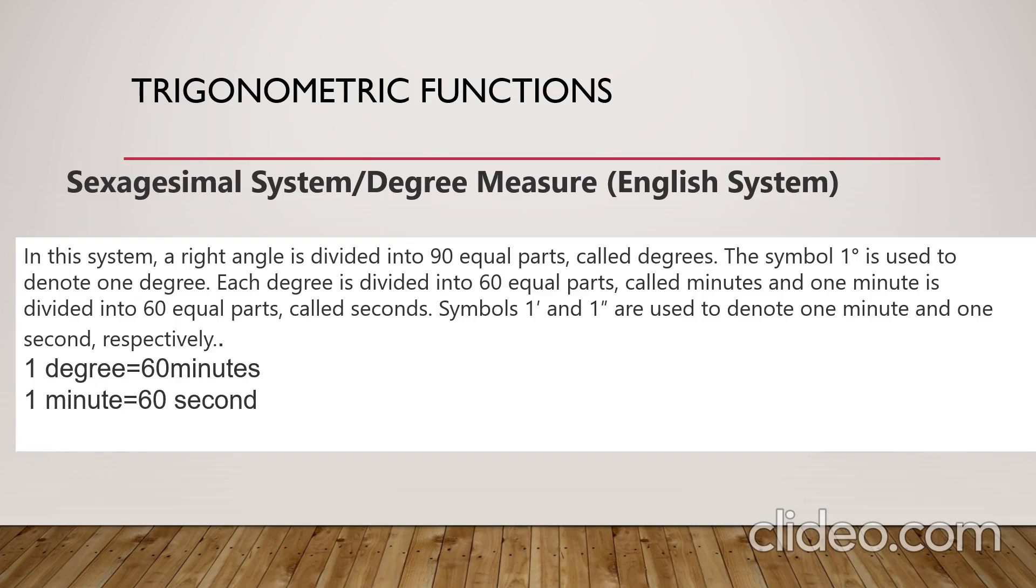Now you will learn two types of measurement. One is sexadecimal and second is radian system. Sexadecimal means degree system, which you know already. There, 30 degree, 45 degree, 60 degree, or 90 degree. In sexadecimal system, we divide 360 degrees into 60 equal parts. It means 1 degree equals 60 minutes, and 1 minute equals 60 seconds. Also, 1 minute equals 6 degrees.